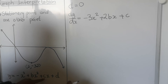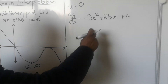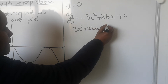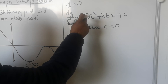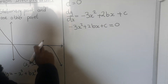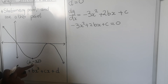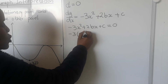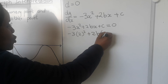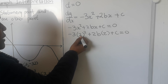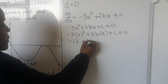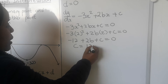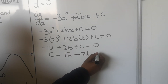The derivative equals zero at a stationary point. So I equate it to zero and substitute x equals 2 from the stationary point: negative 3 times 2 squared plus 2b times 2 plus c equals 0. That gives negative 12 plus 4b plus c equals 0. Making c the subject: c equals 12 minus 4b. This is my equation 1.